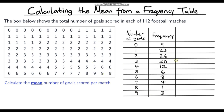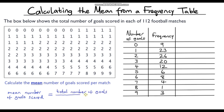Now we've completed our frequency table, let's look at calculating the mean number of goals scored per match. The mean will be if we add up all of the numbers and then divide by how many numbers there are. So the mean number of goals scored is going to equal the total number of goals scored divided by the total number of matches.